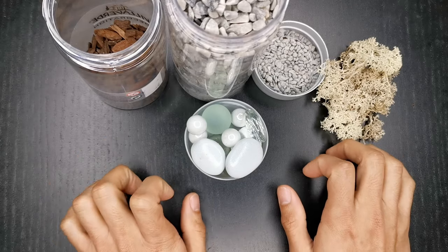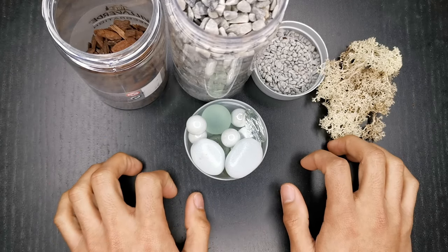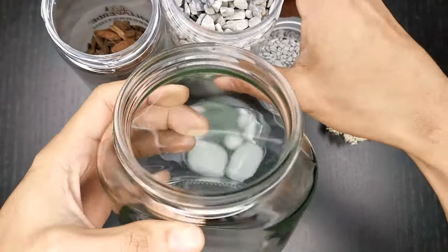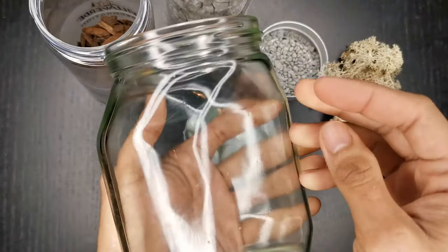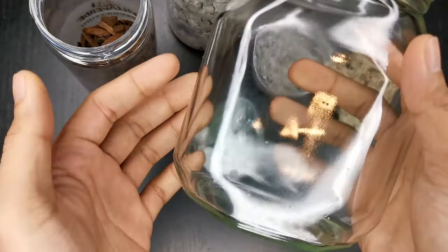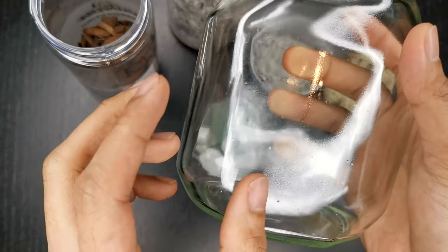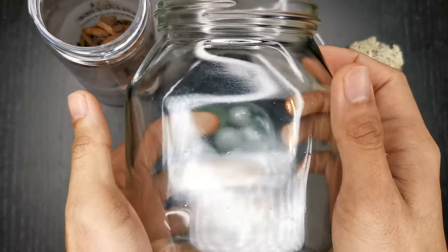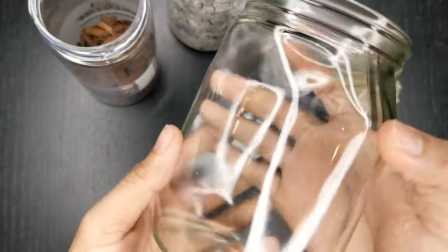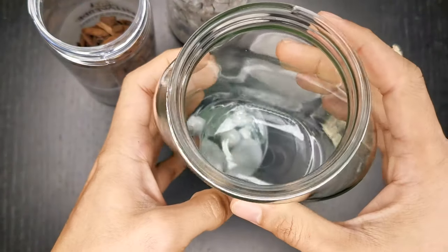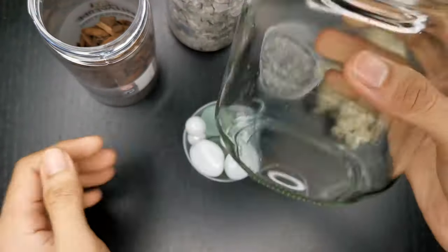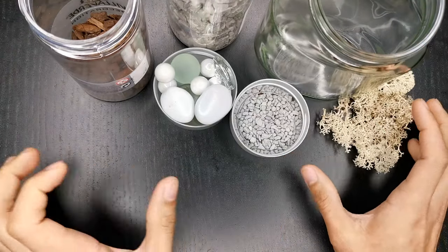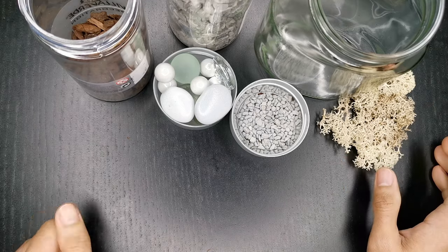You can also use shells or sand. The good thing about using a transparent bottle like this Nutella jar is that you can actually see the layers that you're gonna create later on. It's really cool, you can appreciate the decorations if you put it in a transparent bottle. You can't start this without our Tillandsia.